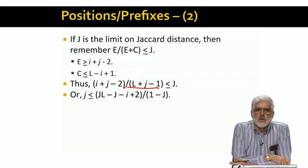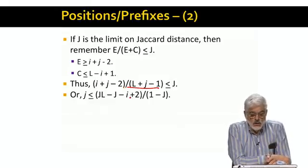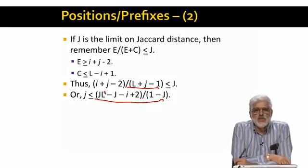The right side of the inequality is messy in the extreme. But for a given position I of the first string, everything is known. We know the upper limit capital J on the Jaccard distance, and we know L, the length of the first string. So we can calculate the value of this formula.